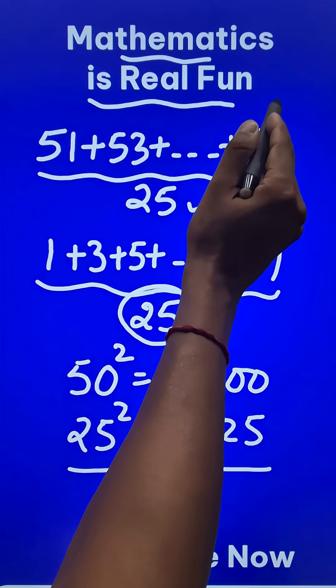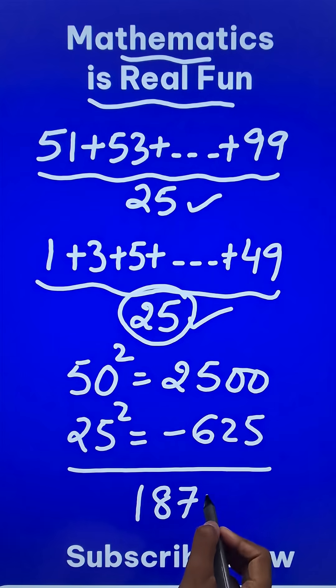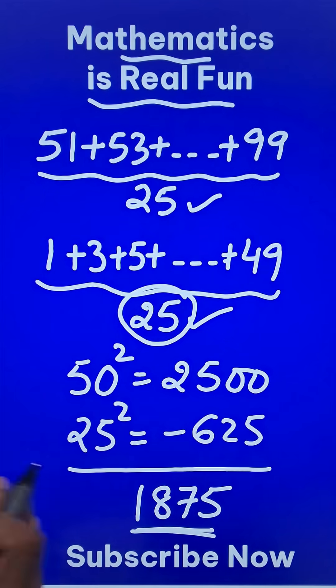The result you will get the sum of the odd numbers from 51 to 99, and that answer is 1875. Now pick up the calculators and check your answer.